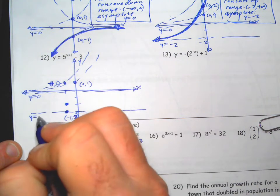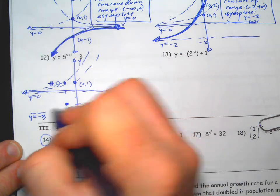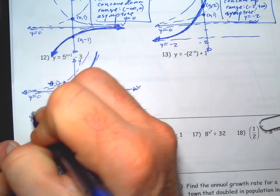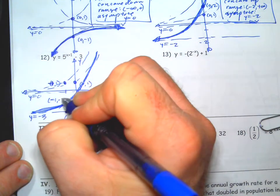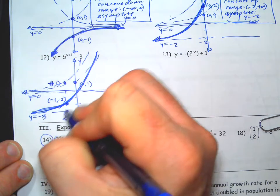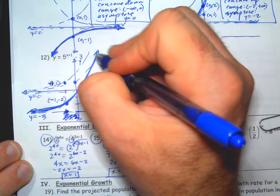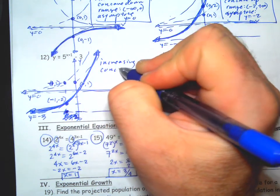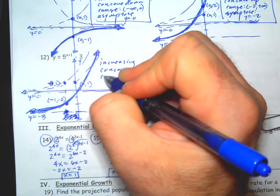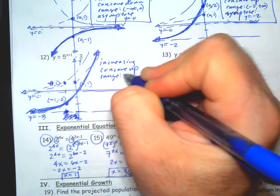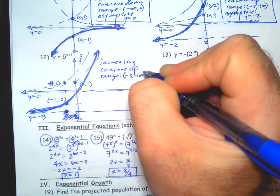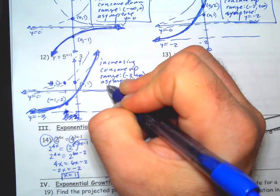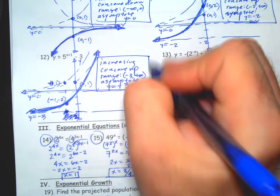Or negative two. Asymptote y equals negative three. It is increasing, concave up. Range is negative three to positive infinity, and the asymptote is y equals negative three. There we go.